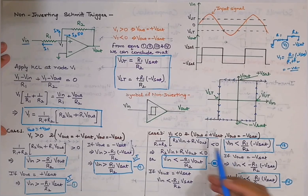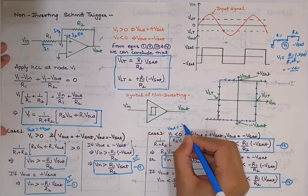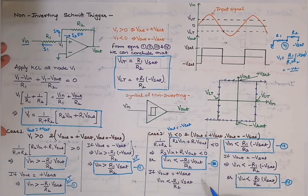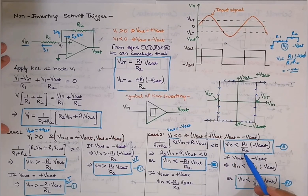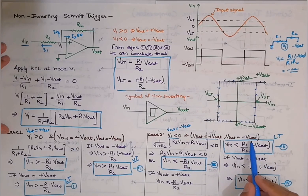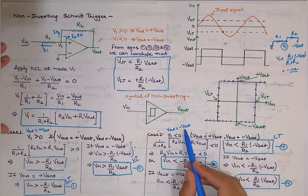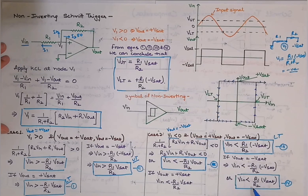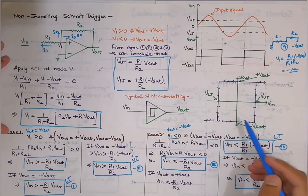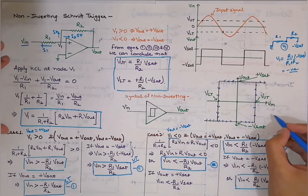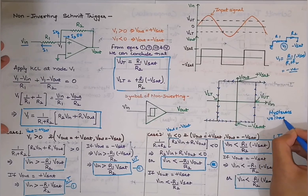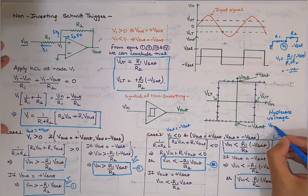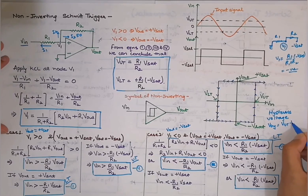For the second scenario: to drive the output to −Vsat, if the previous state is +Vsat, Vin must be less than the lower threshold; if already at −Vsat, Vin must remain less than the upper threshold to maintain that state. Using these four equations, the hysteresis voltage is: V_hysteresis = V_upper_threshold − V_lower_threshold.